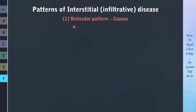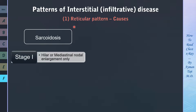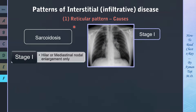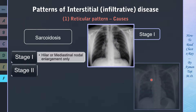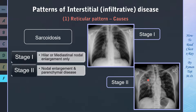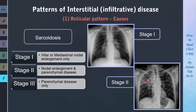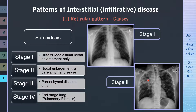Another cause of diffuse reticular opacities on a CXR is sarcoidosis, a multi-system disorder characterized by non-caseating granulomatous inflammation. First symptoms usually include exertional dyspnea and a dry cough, and a chest X-ray is the most appropriate initial test. Pulmonary sarcoidosis is classified into four stages: Stage 1 shows hilar or mediastinal nodal enlargement only; Stage 2 shows nodal enlargement and parenchymal disease; Stage 3 shows parenchymal disease only; and Stage 4 (end-stage lung) shows pulmonary fibrosis.